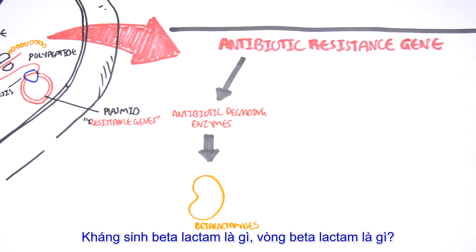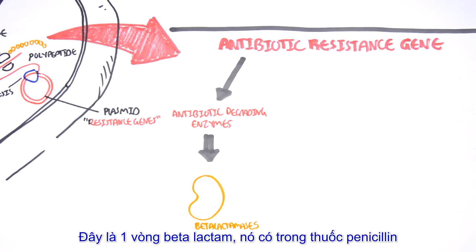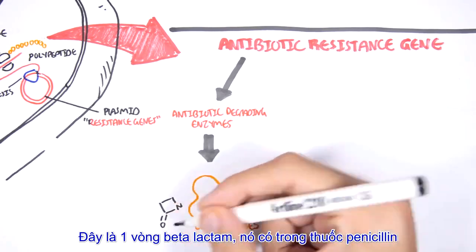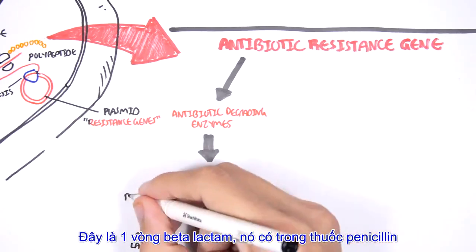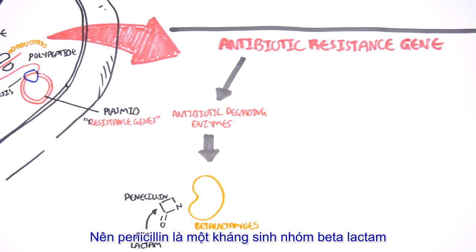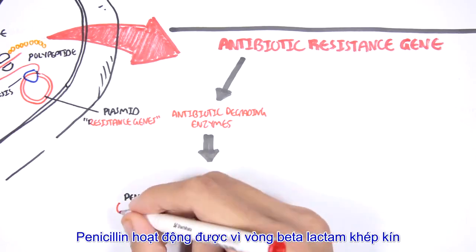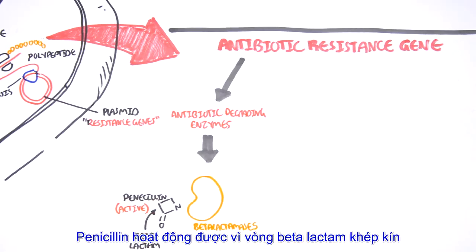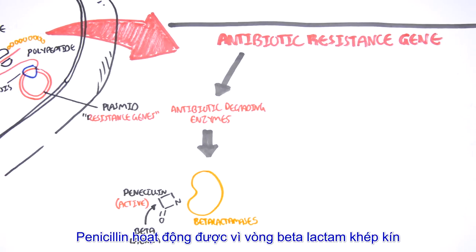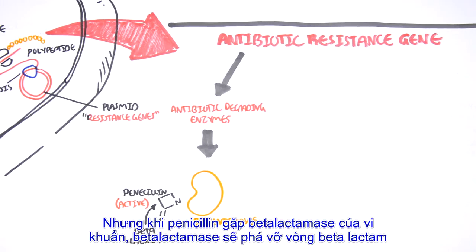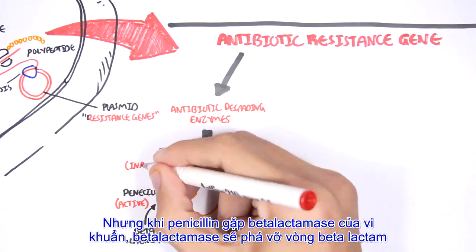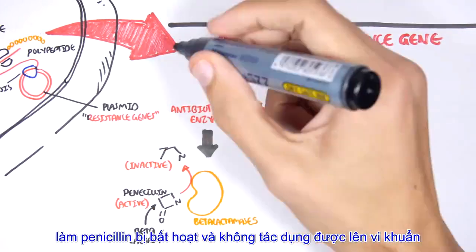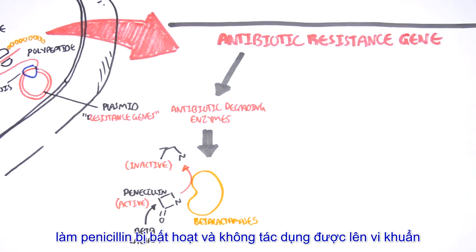What are beta-lactams and beta-lactam rings? This is a beta-lactam ring, and beta-lactam rings are found in penicillin — so penicillin is a beta-lactam antibiotic. Penicillin is active because the beta-lactam ring is closed. However, when penicillin encounters a beta-lactamase in the bacteria, the beta-lactamase will break the beta-lactam ring, causing penicillin to become inactive, and thus it will have no effect on the bacteria.